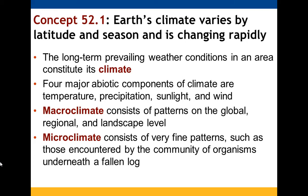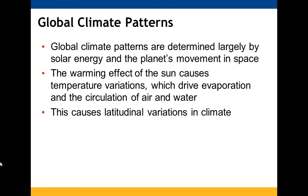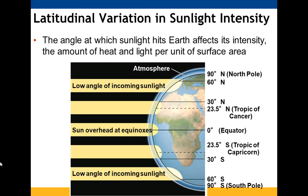Global climate patterns are determined primarily by solar energy and the planet's movement in space. The sun's warming effect causes variations in temperature, influencing evaporation and how air and water circulate, resulting in latitudinal variations in climate. Sunlight hits at different angles, affecting its intensity and the amount of heat and light obtained per surface area. At the poles the angle of incoming sunlight is low, while at the equator it's nearly straight on, and at the tropics it's close to perpendicular with a slight angle.